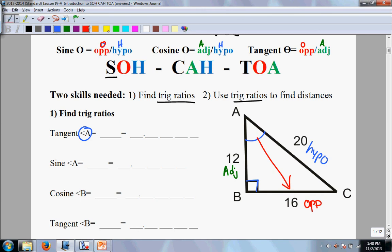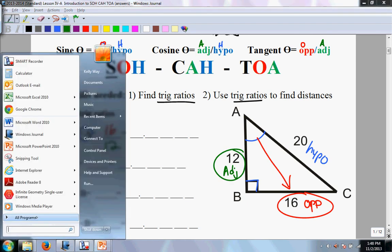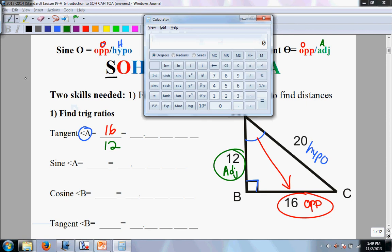Tangent is going to be opposite over adjacent. So my opposite side here is going to be 16 and my adjacent side is going to be 12. From here, you just get your calculator and get your decimal. It's going to be 16 divided by 12, and you take it to the fourth decimal place, which is 1.3 repeating.